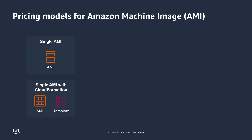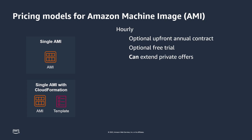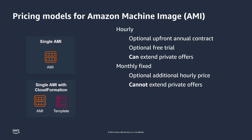The pricing models available for single AMIs and single AMIs with CloudFormation are the same. With hourly pricing, AWS Marketplace automatically tracks the buyer's hourly usage for each Amazon EC2 instance used. You can also offer buyers an upfront annual contract with a discount, a free trial, or a private offer. The monthly fixed pricing model charges buyers a monthly rate regardless of their usage. You can charge an additional hourly rate for EC2 instance usage, but you cannot extend private offers with this model.